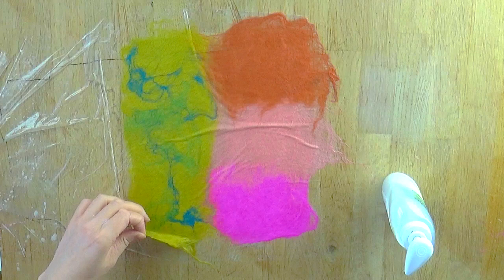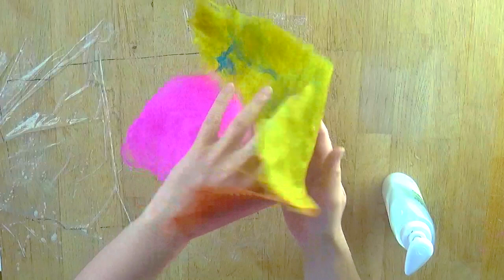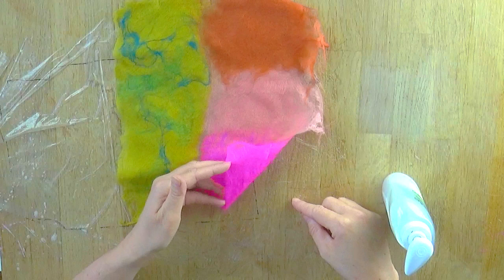Take a corner or an edge and pick it up and lift it up from the plastic underneath. And it will feel like a very soft, delicate silk scarf. If the fibers are still sticking to the plastic, then you've not felted enough. So I would add a little more water, a little more soap, continue felting for a few more minutes.